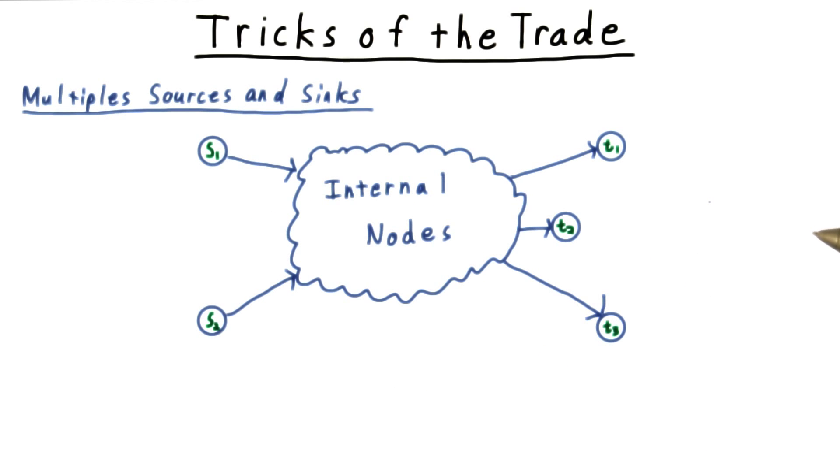Another limitation of our model is that we've limited ourselves to having a single source and a single sink. At first, it would seem like we couldn't handle a network like this one, where we have two sources and three sinks.